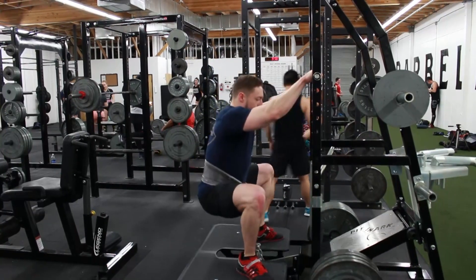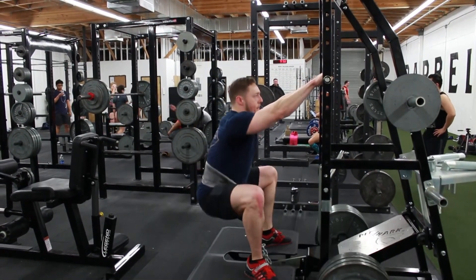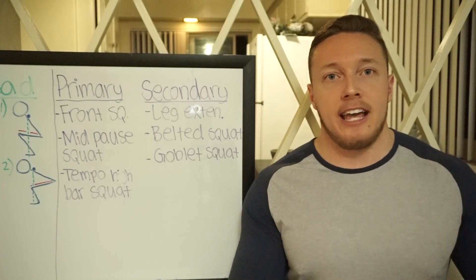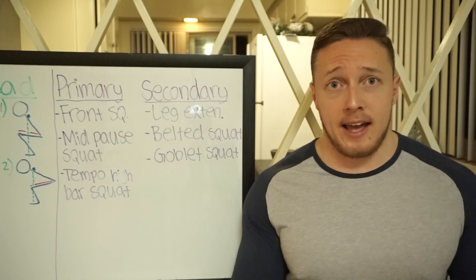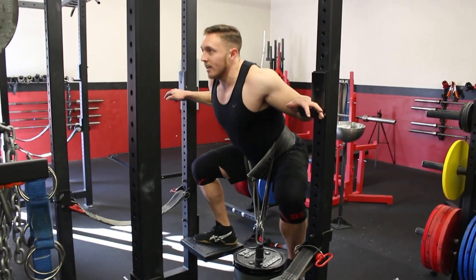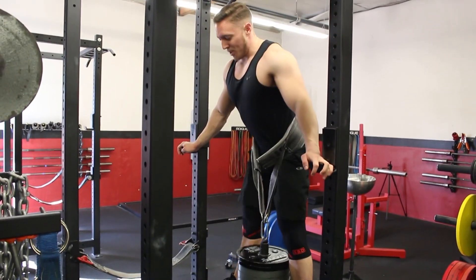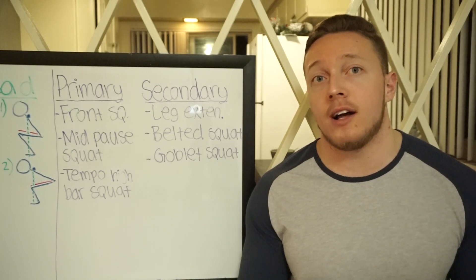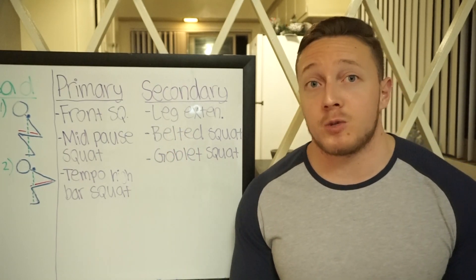Next: belt squats. This is something I discovered in the last year and it's amazing because the belt is over your waist — there's no demand on your torso to stay upright, it's all leg and all quad. If you have a pit shark machine, use that. If not, you can recreate this with a pull-up belt or really anything and do a bunch of belted squats. You can annihilate your quads in a squatting movement pattern while removing pretty much every other muscle. I would actually put belt squats above leg extensions — it's probably the first one I would go to.